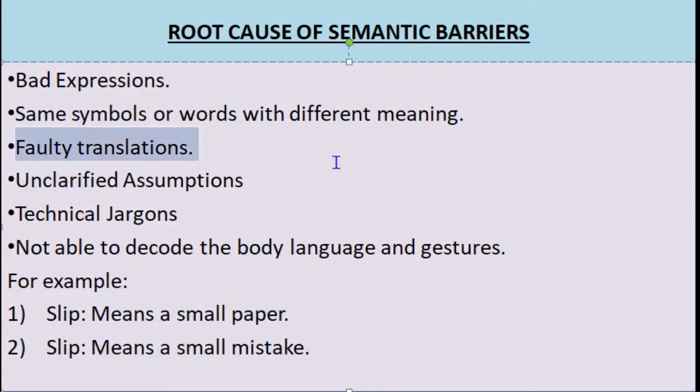The third root cause is faulty translation. When we translate one language to another, we should never do a word-for-word translation. For example, if you are given a Hindi paragraph and asked to translate it into English, someone unaware of language rules will translate word by word and the translation will come out wrong. Using such faulty translations in communication creates barriers and adversely affects the process.